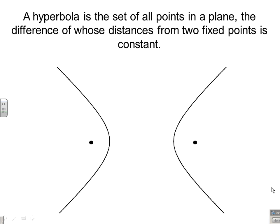So this is the geometric definition. A hyperbola is the set of all points in a plane, the difference of whose distances from two fixed points is constant. And if that sounds familiar to you, if you replace the word hyperbola with ellipse and the word difference with sum, you've got the geometric definition of an ellipse.